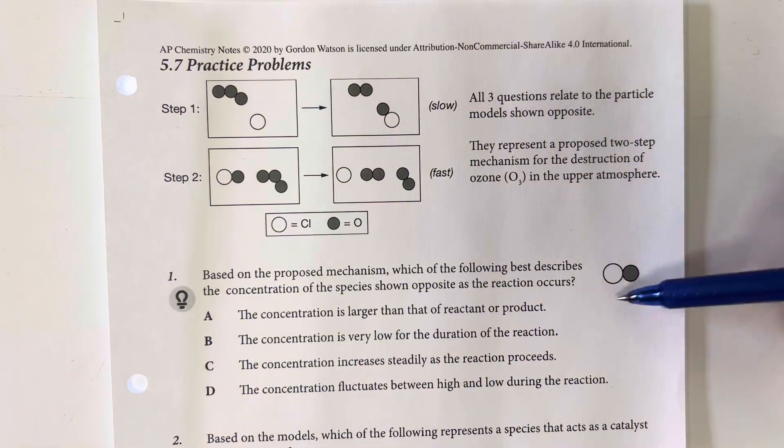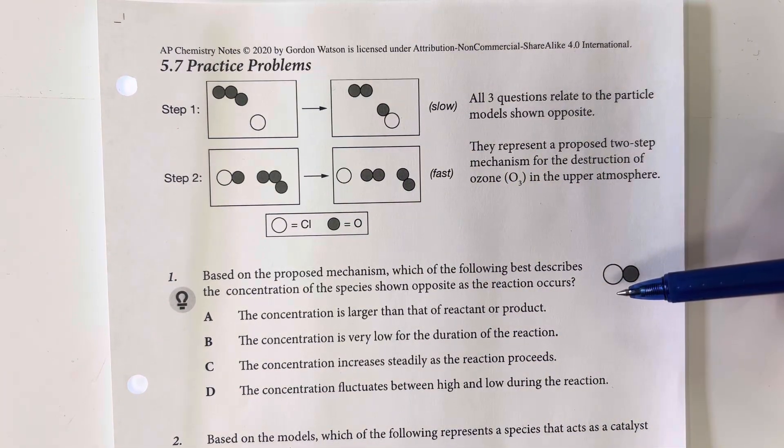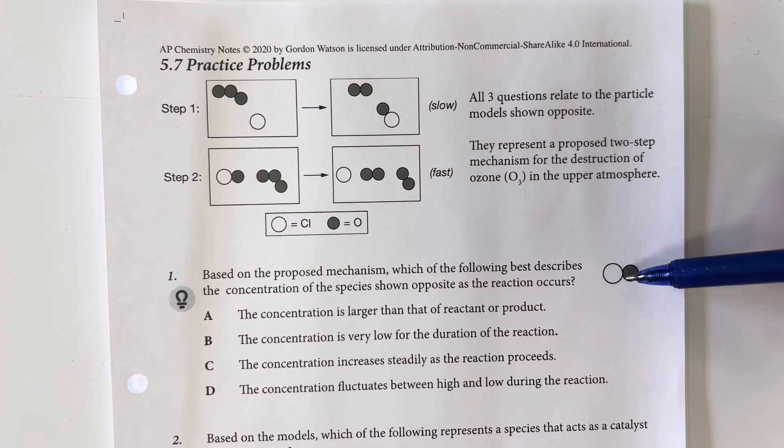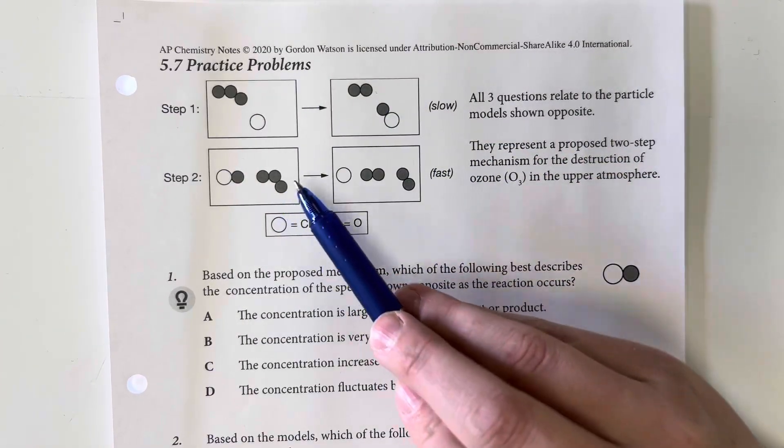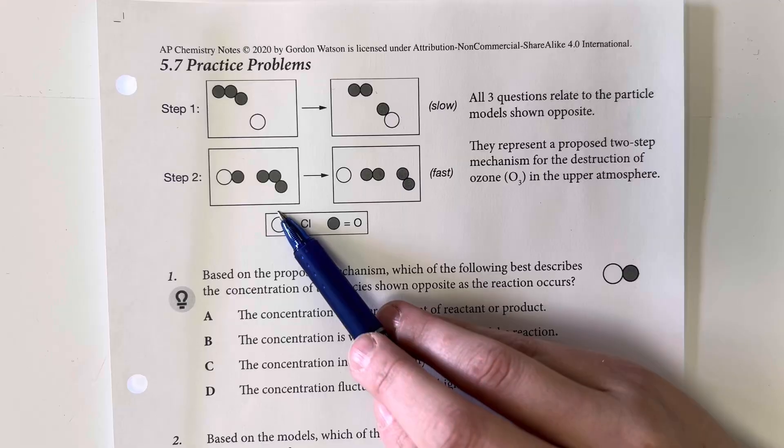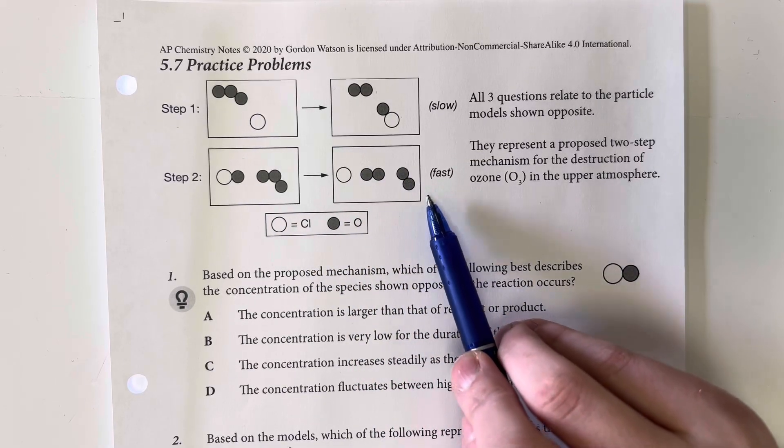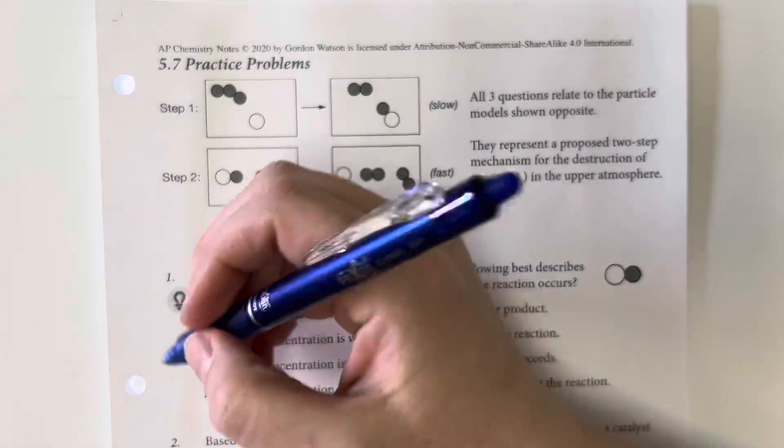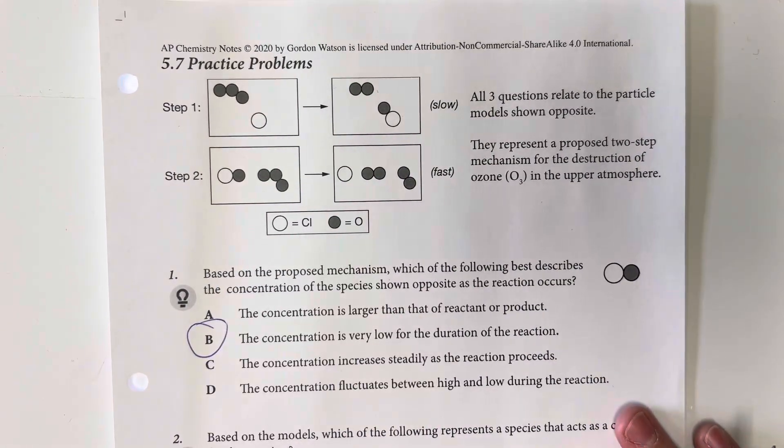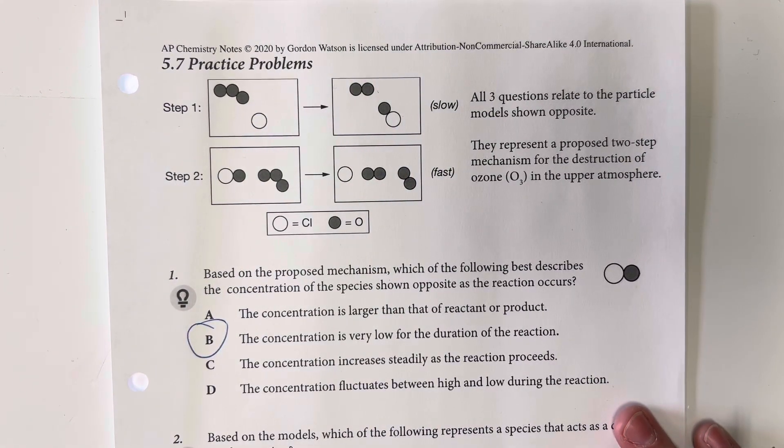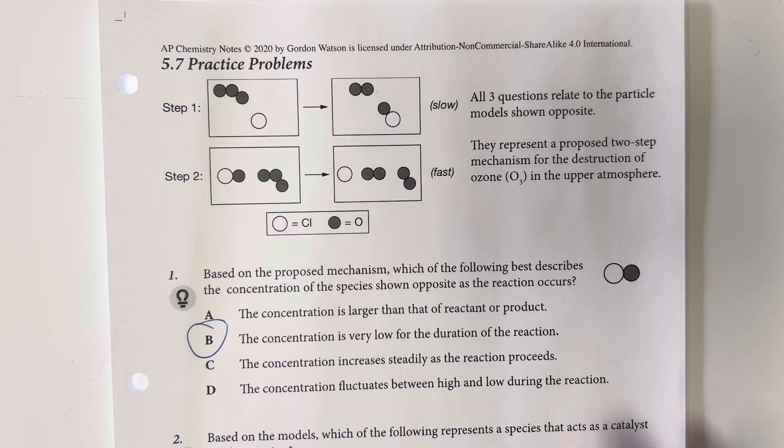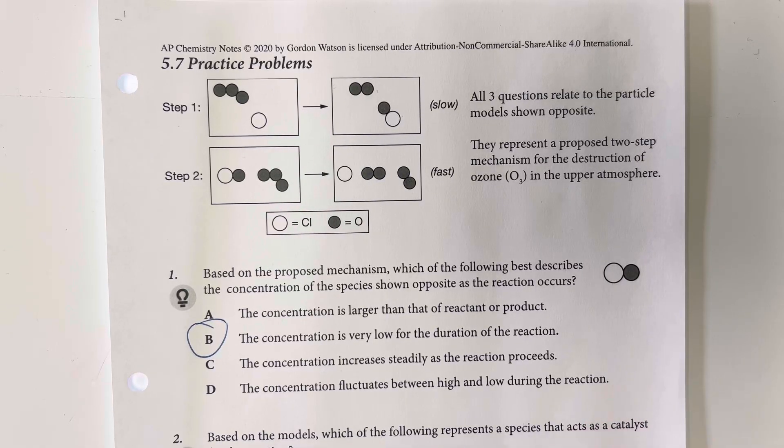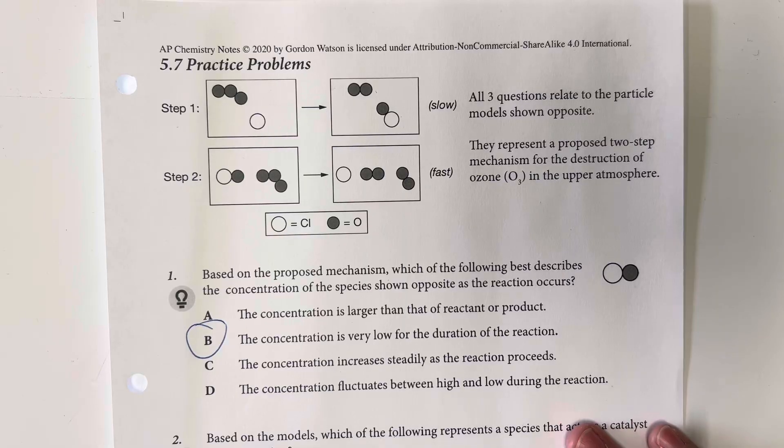So I'm going to have a relatively low concentration of that chlorine oxide, since it is an intermediary, and it is also required for this fast reaction, which means it's going to be used pretty quickly. So I am going to say that B, the concentration is very low for the duration of the reaction, is going to be my best representation of that.